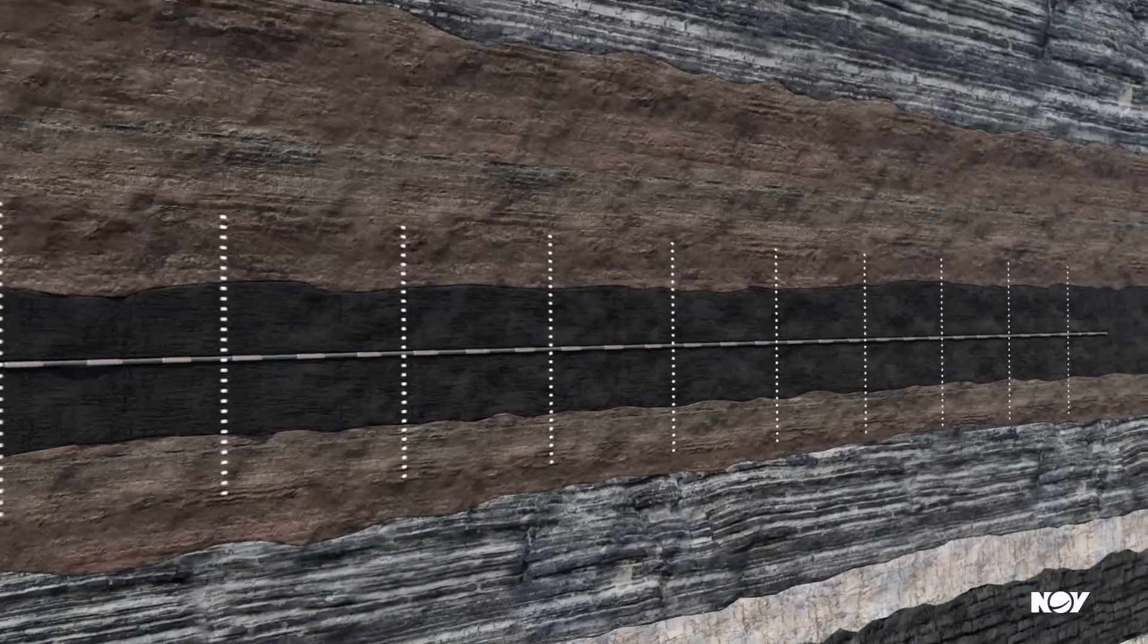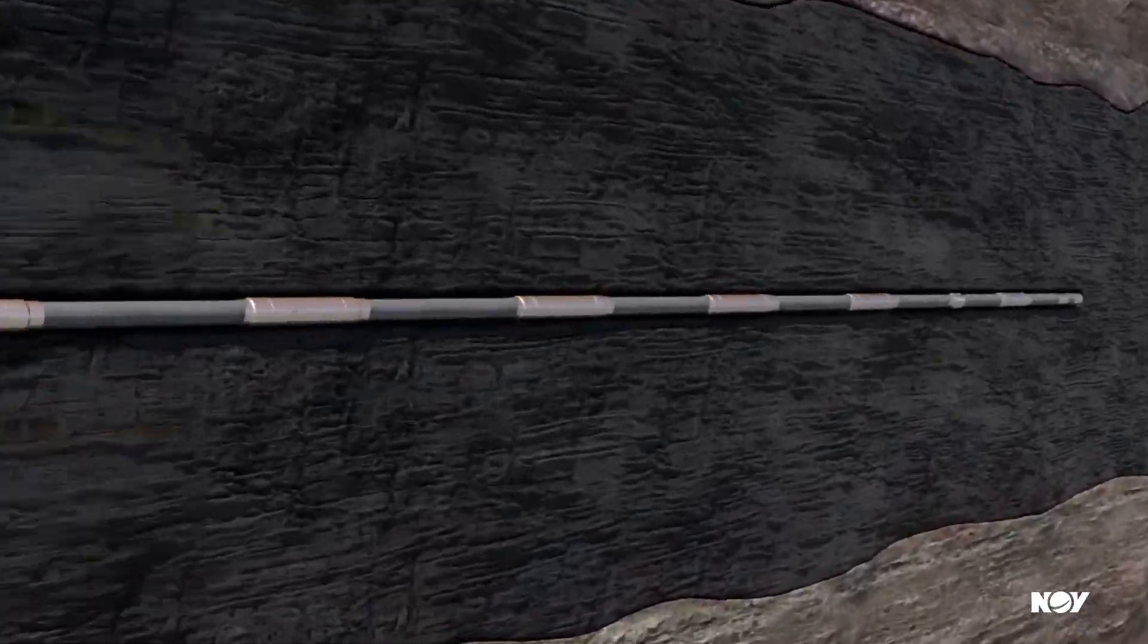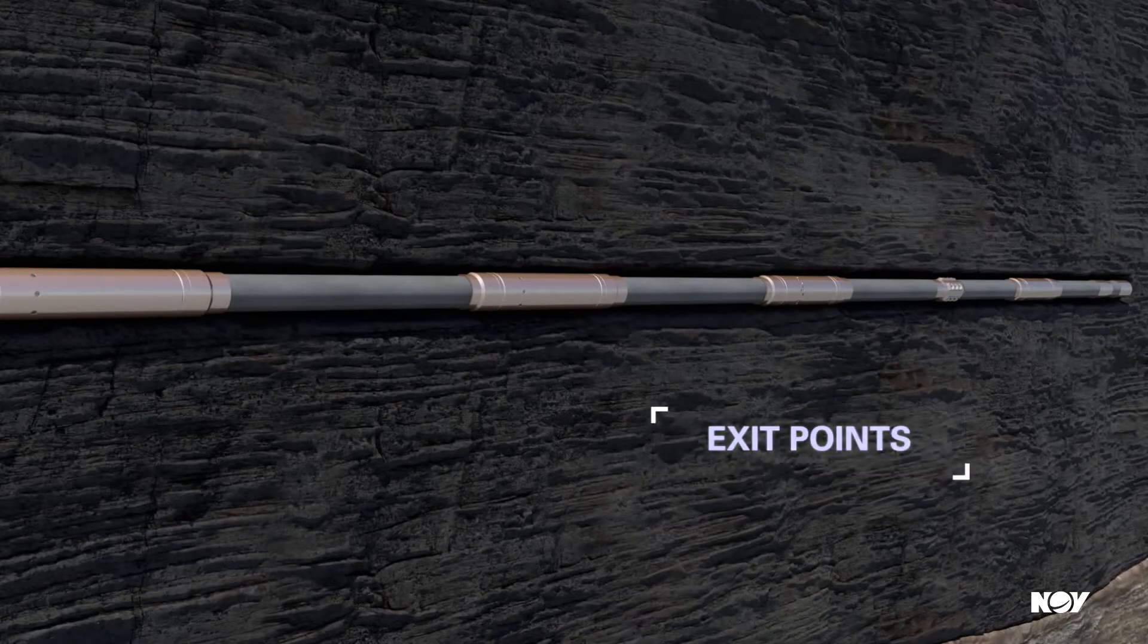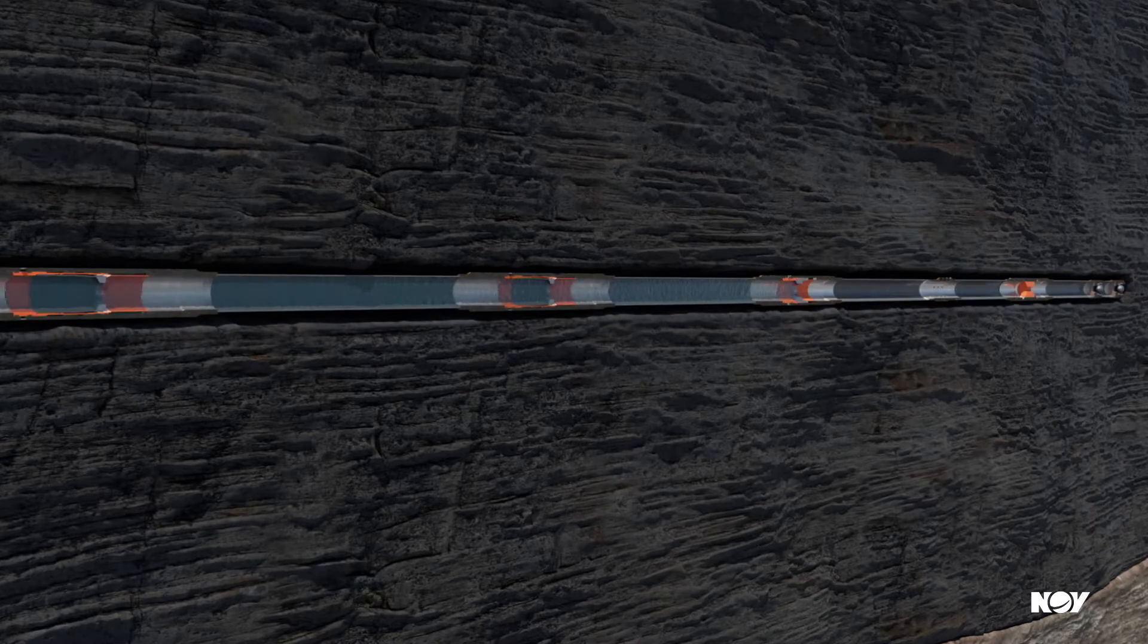The IFRAC sleeves are installed at predetermined depths along the completion string to provide exit points for the stimulation treatment, eliminating the need for wireline conveyed explosive perforating.